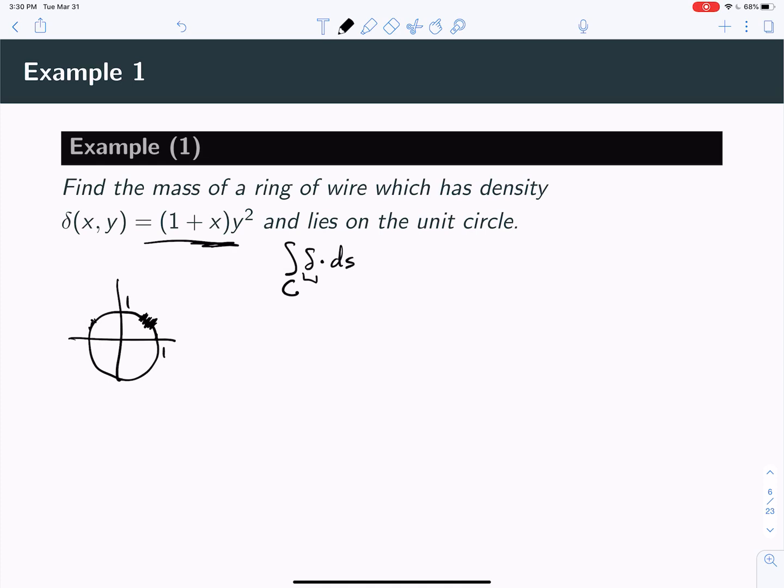The density of a length of wire times the length of wire equals a mass. Add those up over the entire wire - that is going to give us the mass of that wire.